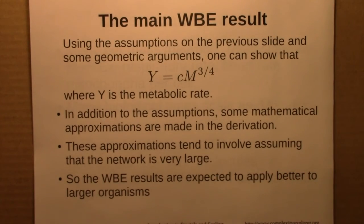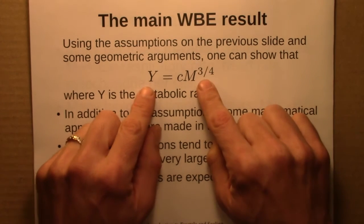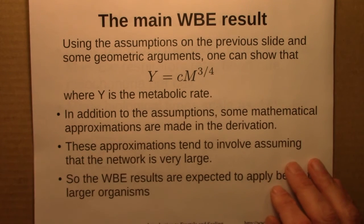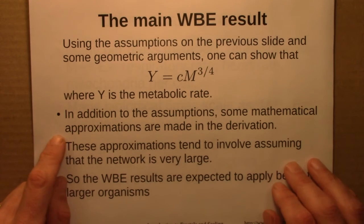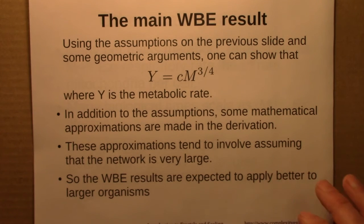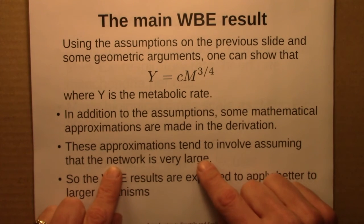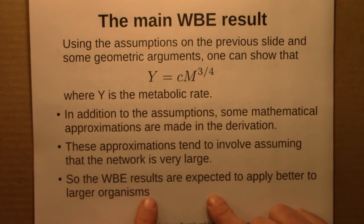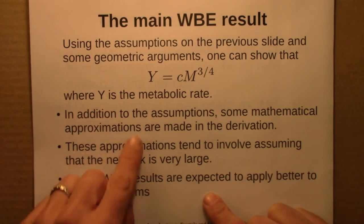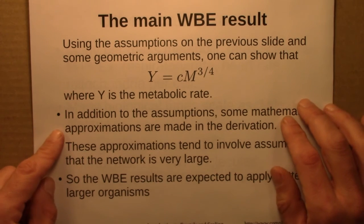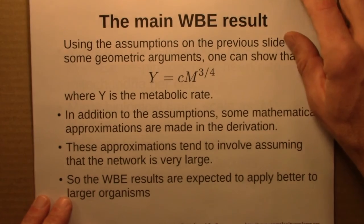If one does the geometry and math on those assumptions, one is able to derive Kleiber's law — the three-quarters exponent. A few approximations are made along the way in the derivation, involving the assumption that the network is very large with very many levels. One would therefore expect these results to apply more accurately to larger organisms than to smaller ones, but overall the model is on quite solid footing.